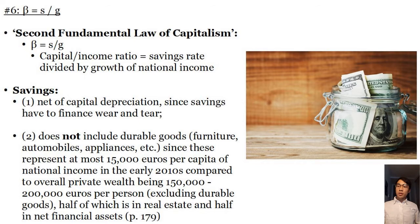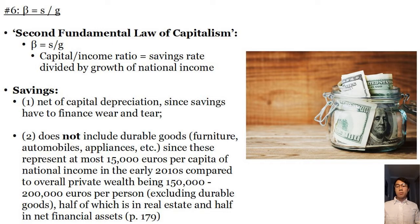In an attempt to provide a more robust theoretical explanation, Piketty introduces his sixth claim: the second fundamental law of capitalism. This law states that beta is equal to s over g, where s is the savings rate and g is the growth of national income. Savings is defined as net of capital depreciation, since there's always going to be wear and tear on factory machinery parts, and savings have to finance this wear and tear. Secondly, savings does not include durable goods such as furniture, cars, or home appliances like a refrigerator, since these represent at most 15,000 euros per capita compared to overall private wealth of about 150,000 to 200,000 euros per person, half of which is mostly in real estate and net financial assets.